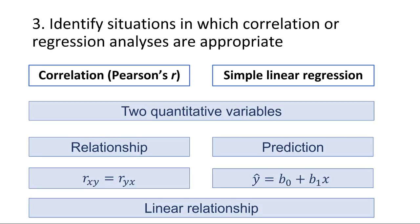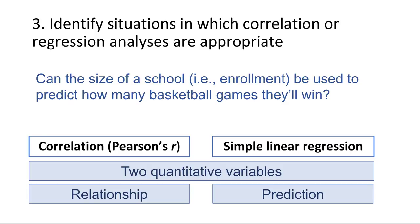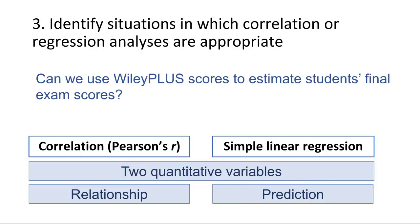Let's look at a few scenarios. Can the size of a school — measured by enrollment — be used to predict how many basketball games they'll win? Both variables are quantitative, and the research question calls for a prediction, so we use simple linear regression. Can we use Wiley Plus scores to estimate students' final exam scores? Both are quantitative variables, and we would be making a prediction, so simple linear regression is the appropriate analysis.